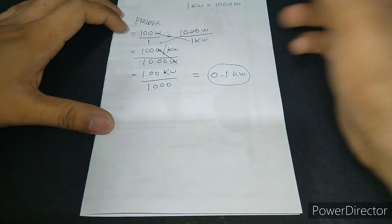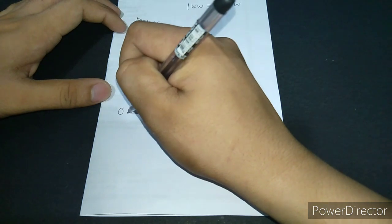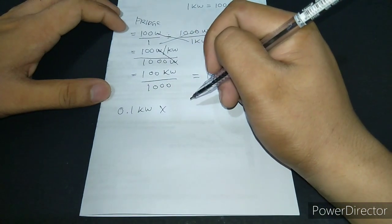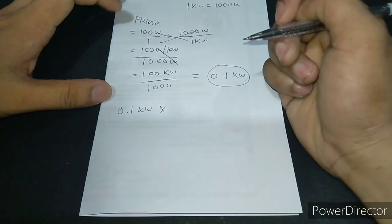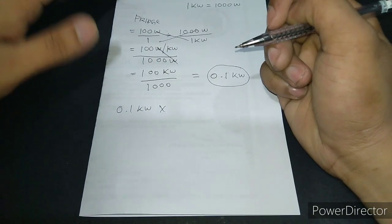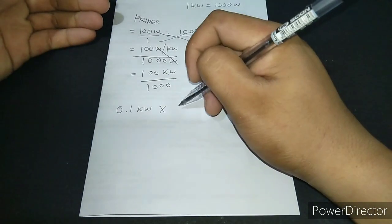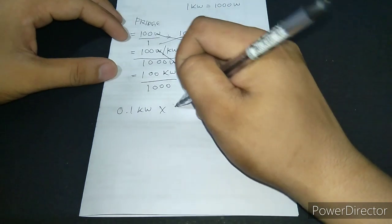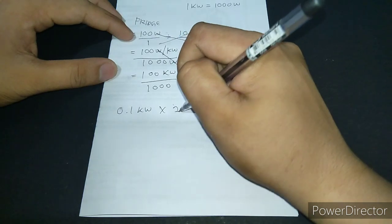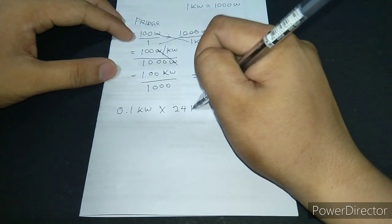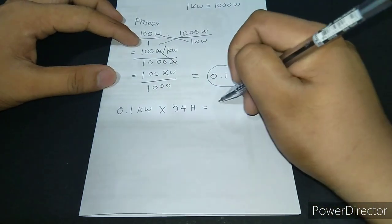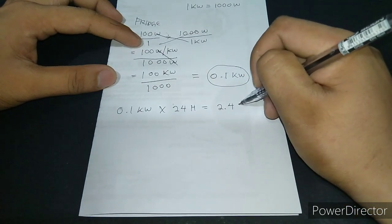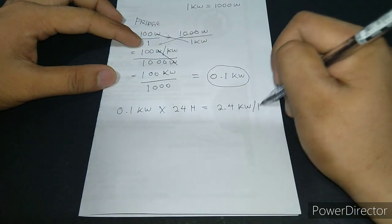Now, let's take that 0.1 kilowatt and multiply it by how many hours our fridge is running. For example, if our fridge is running 24 hours a day, we multiply this by 24 hours. So it equals 2.4 kilowatt per hour. That is our daily consumption of our fridge.